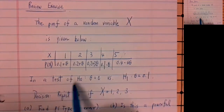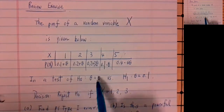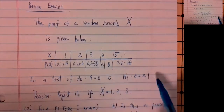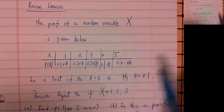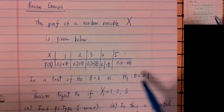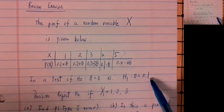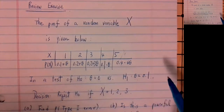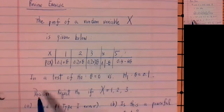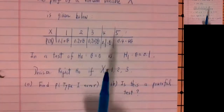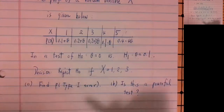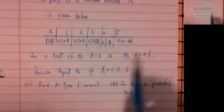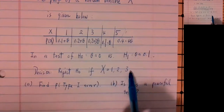In our test of H-naught, theta equals 0, or theta equals 0.1. H-naught is theta equals 0, and H1 is theta equals 0.1. Our decision is we're going to reject H-naught if X is 1, 2, or 3.